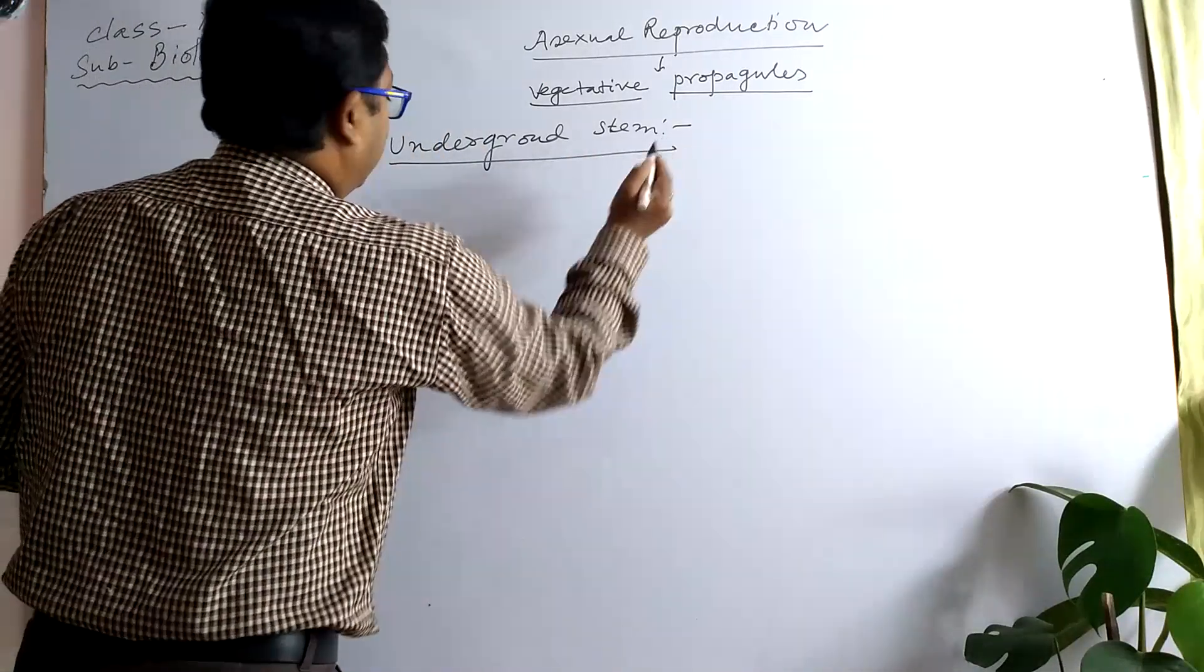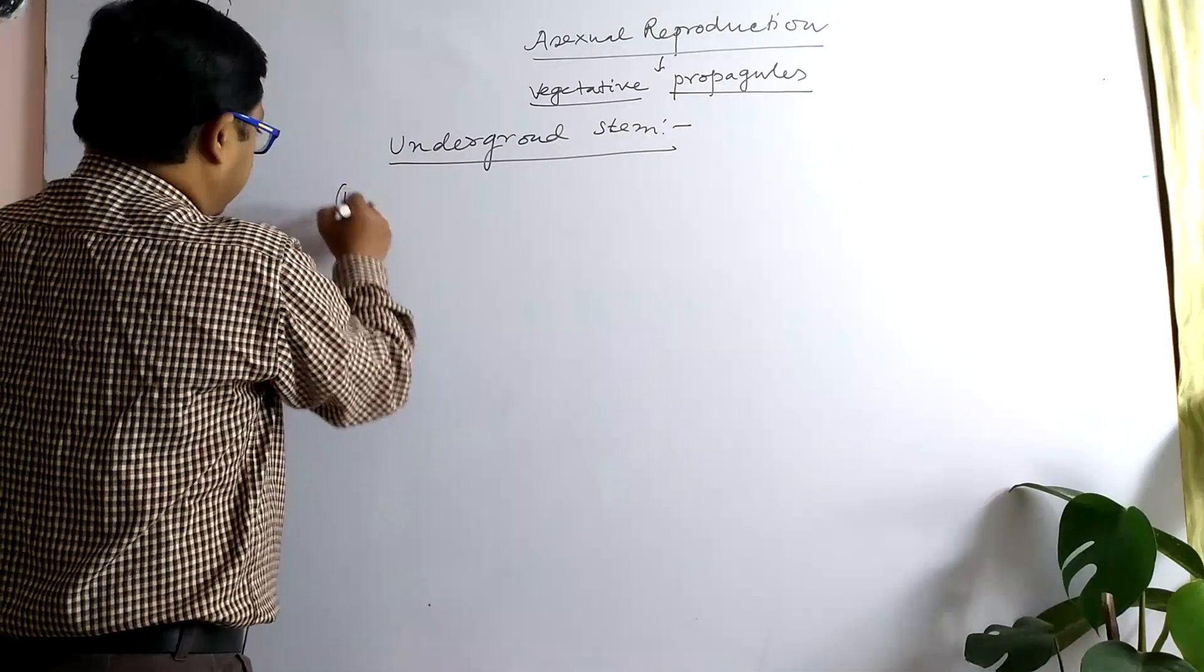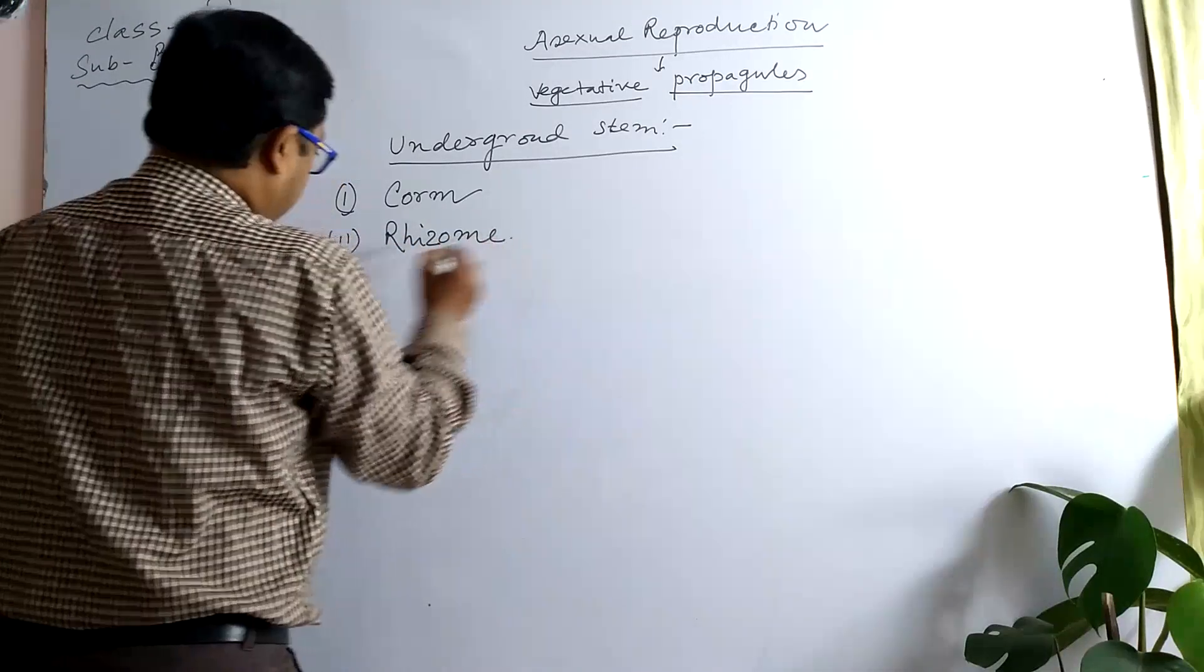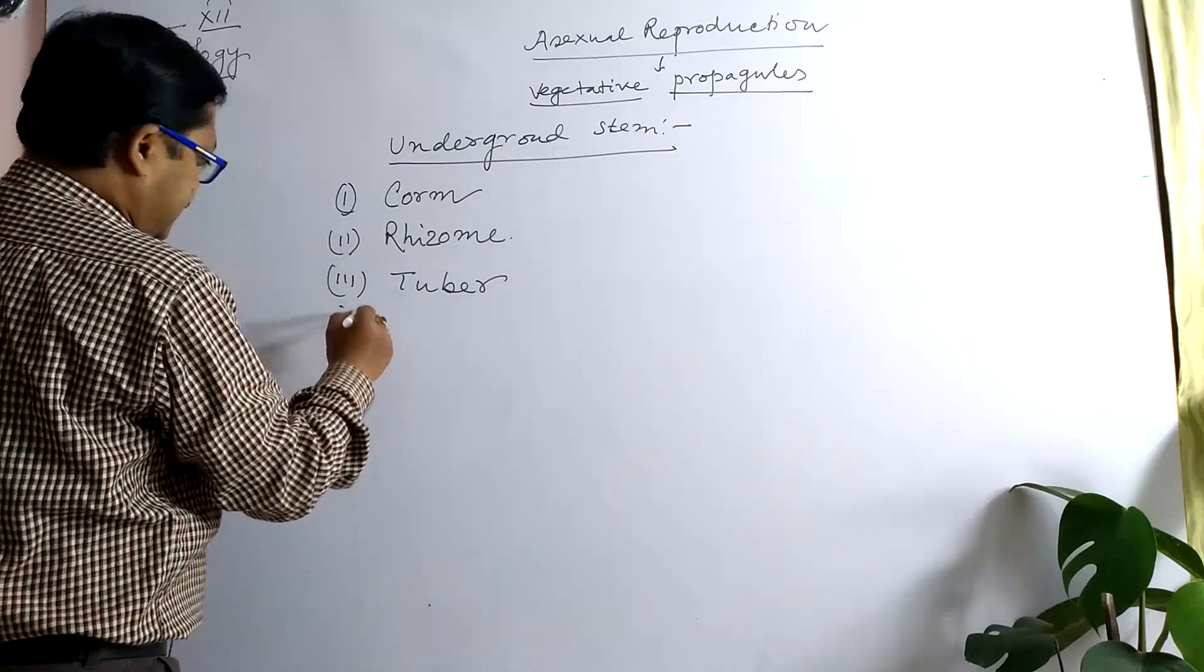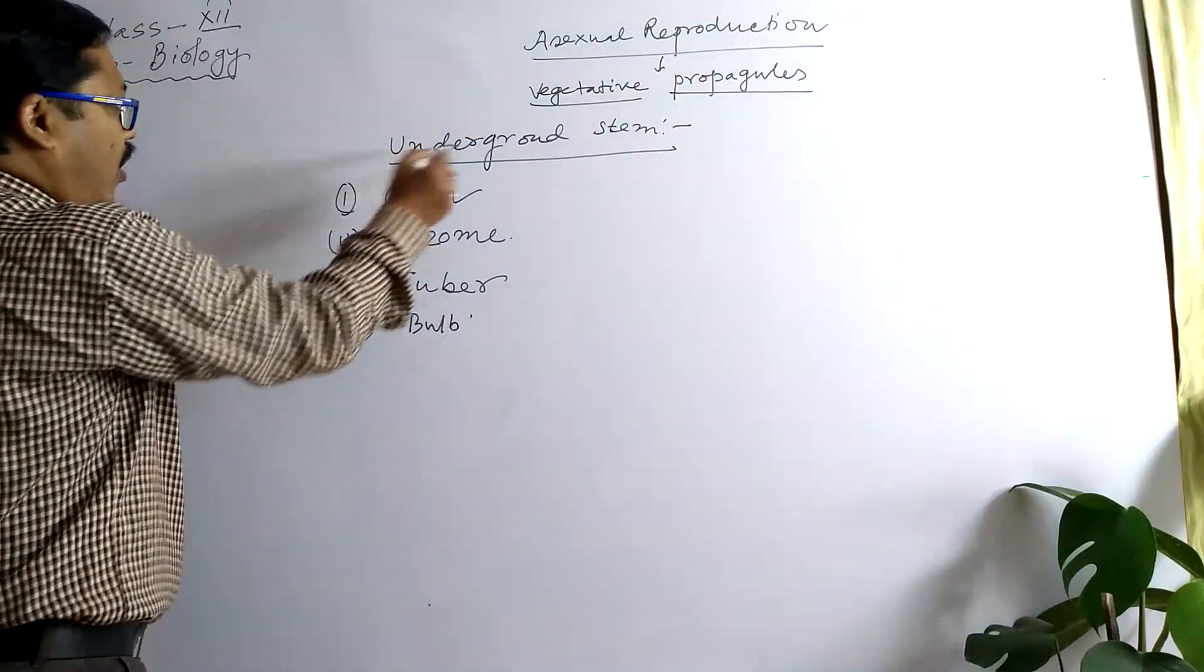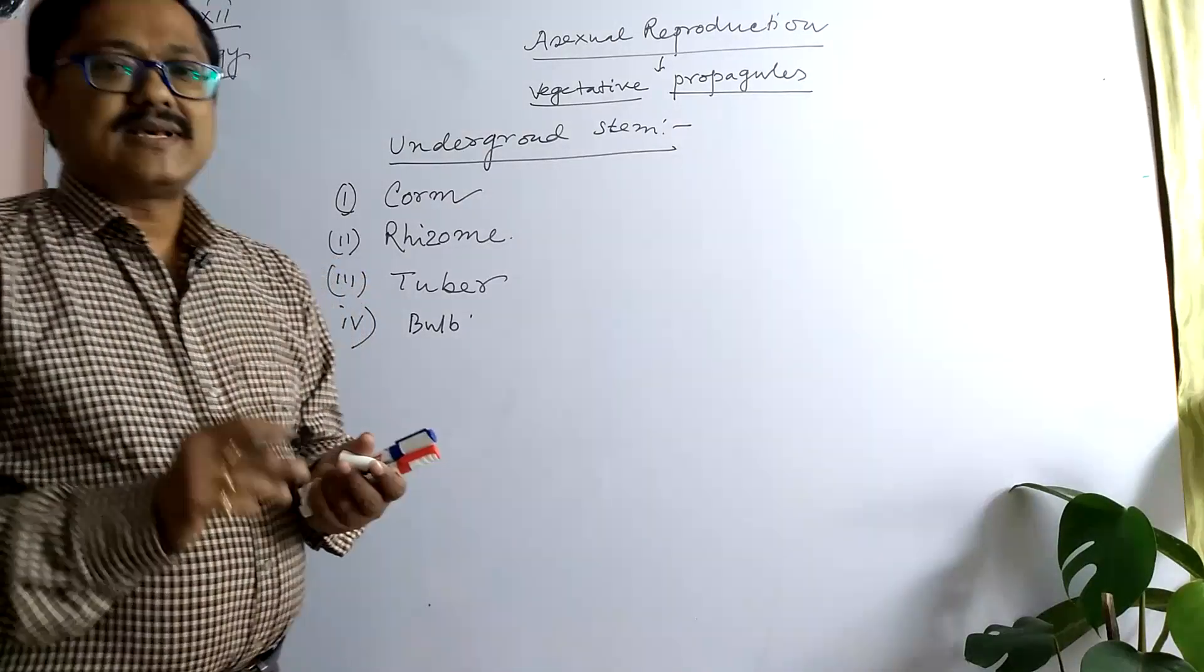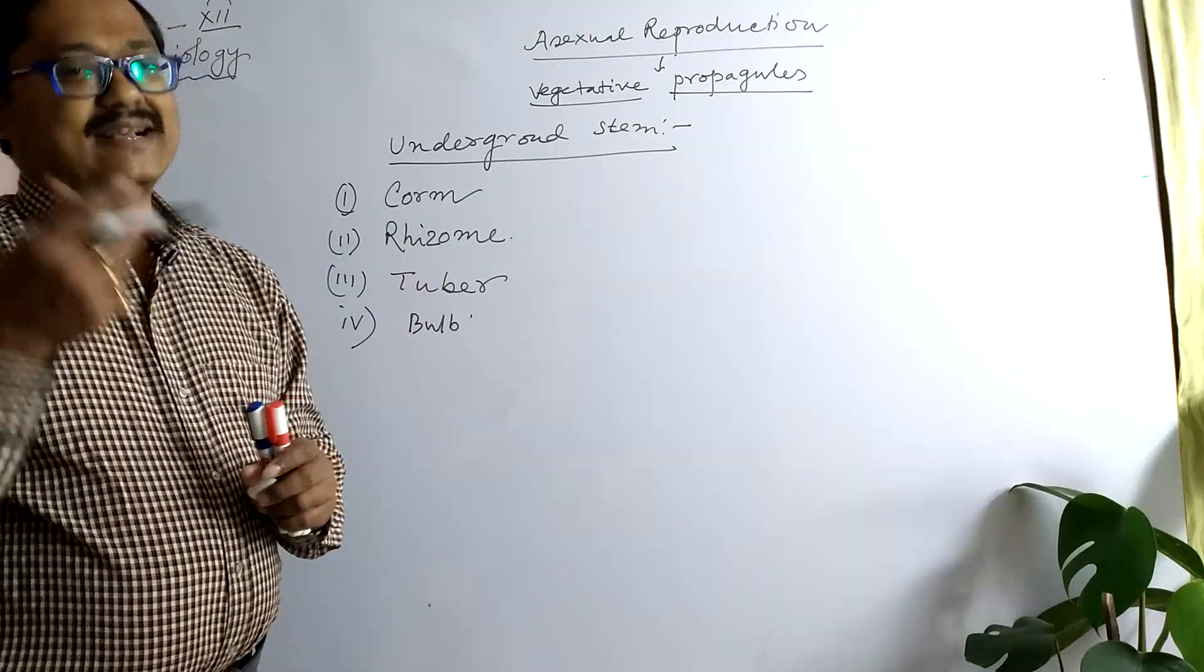Several underground stems - you probably read this subject in class 11. First part is Corm, second is Rhizome, third is Tuber, and fourth is Bulb. All these are underground stems that are swollen enlarged, having scaly leaves as well as adventitious roots. They also produce axillary buds.